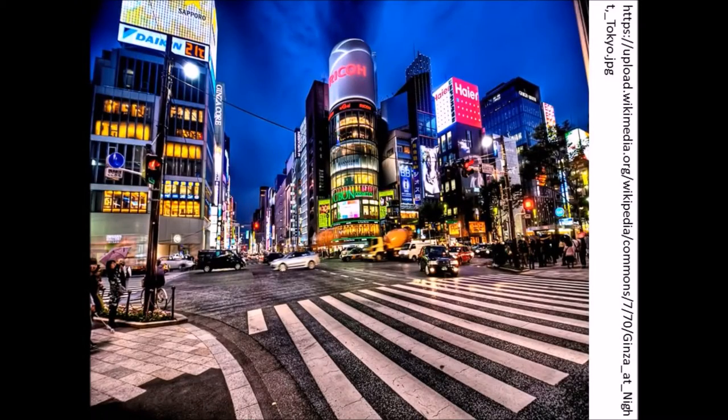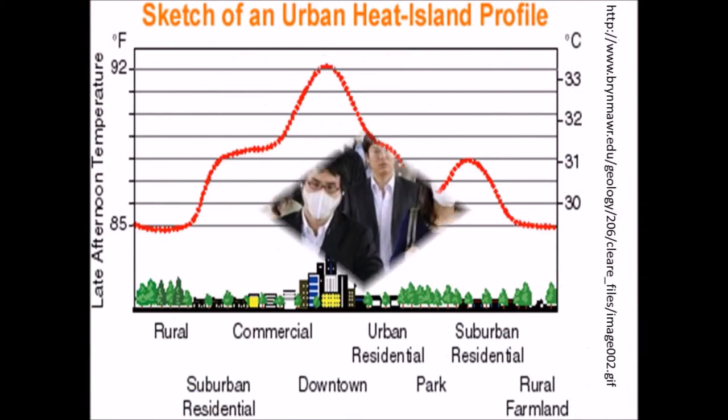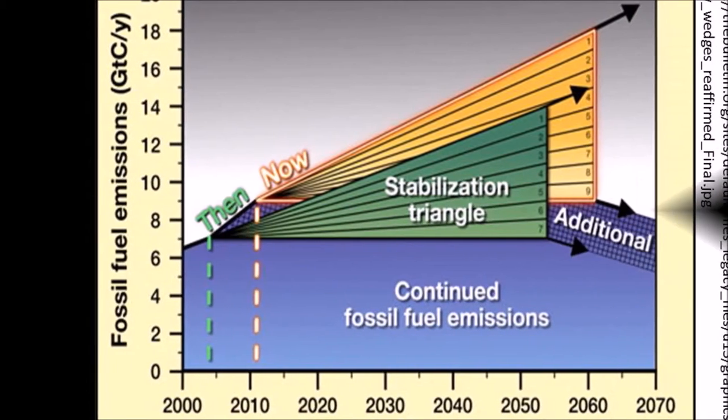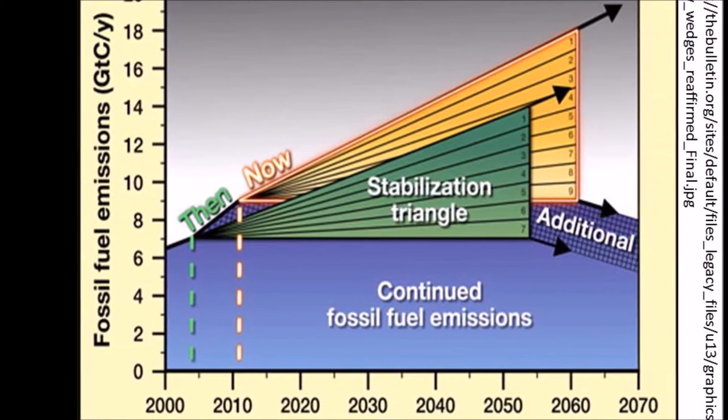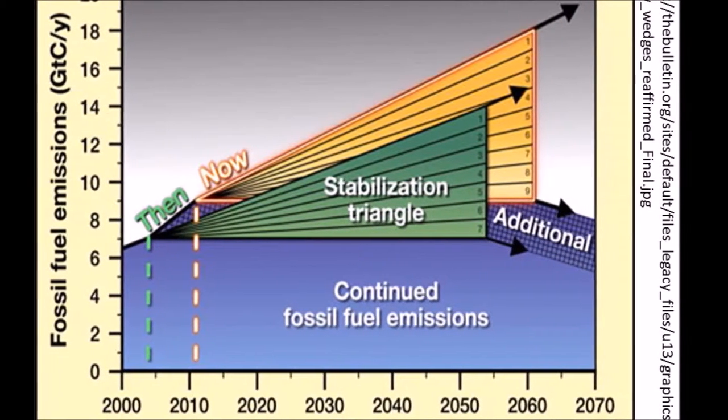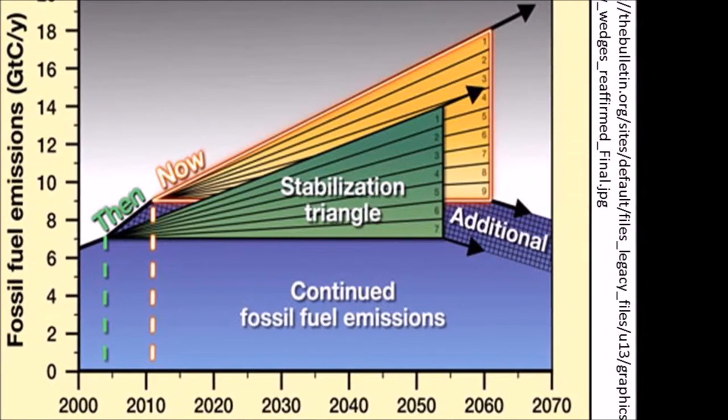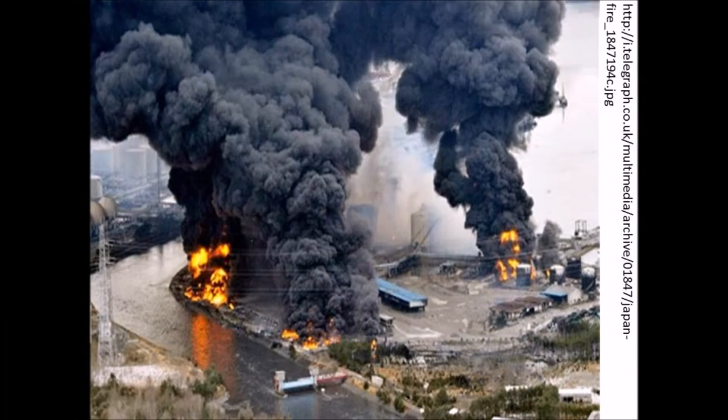Tokyo faces two major environmental issues, such as air pollution and the heat island effect in urban areas. In the stabilization wedges, I will find ways to reduce Tokyo's carbon emissions using modern technology. The nuclear energy wedge is out of context for Japan after the Fukushima disaster in 2011.